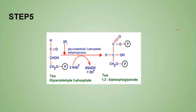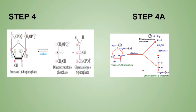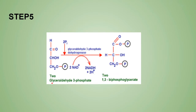Step 5 is known as the NADH production phase. The two molecules of glyceraldehyde-3-phosphate undergo a dehydrogenation reaction catalyzed by glyceraldehyde-3-phosphate dehydrogenase. This produces two molecules of 1,3-bisphosphoglycerate (1,3-BPG) and converts two molecules of NAD⁺ to NADH.